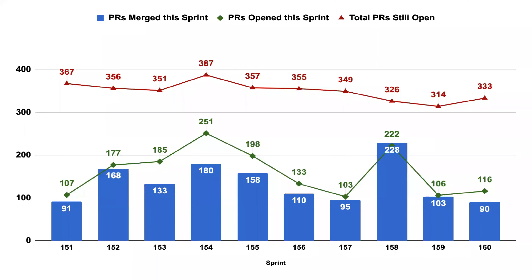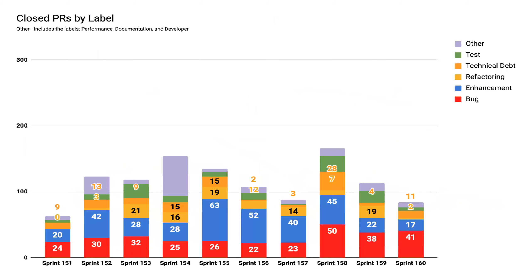This sprint, we had a little bit of a bump up in the number of pull requests opened, and a little bit of a bump down in the number of pull requests merged. As we get reestablished at our new homes at IBM, hopefully these numbers should start trending upwards. There were 41 bugs fixed, 17 enhancements, and the rest sprinkled around.